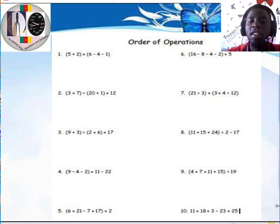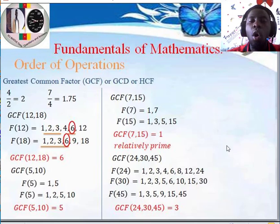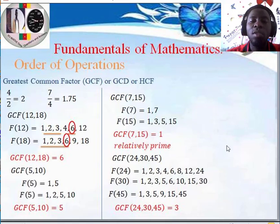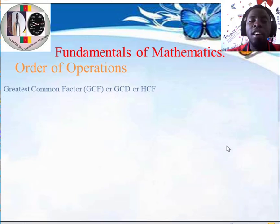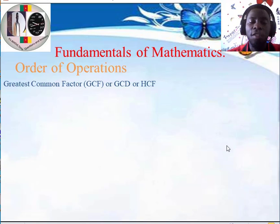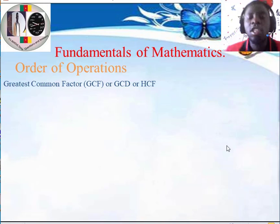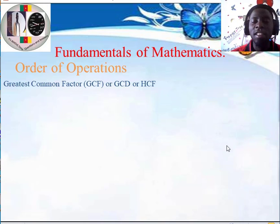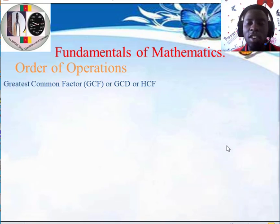Today we are going to look at such expressions — order of operations — and which order we need to follow in an expression having more than one operator. But before we dive into this properly, we are going to look at the greatest common factor and the least common multiple of a number. These two are going to help us simplify operations later. We begin with greatest common factor, which is GCF, also called greatest common divisor (GCD), or what we commonly know as highest common factor, HCF.